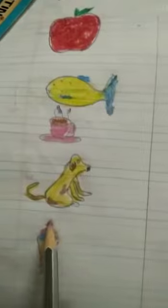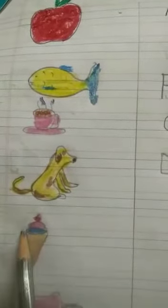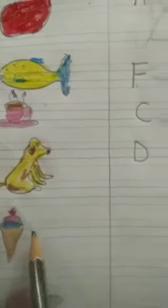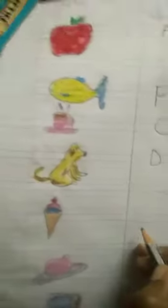Next one is this is what it is. This is ice cream. What for ice cream? I for ice cream. This is capital I. And this is small I.